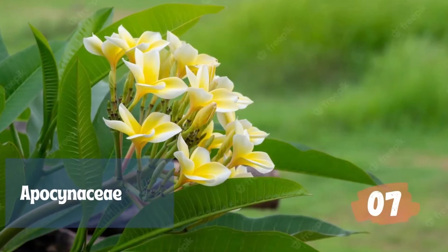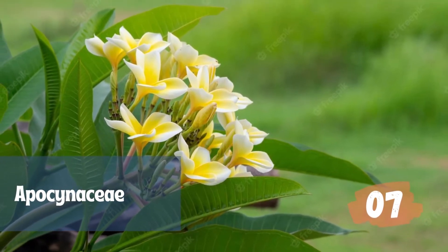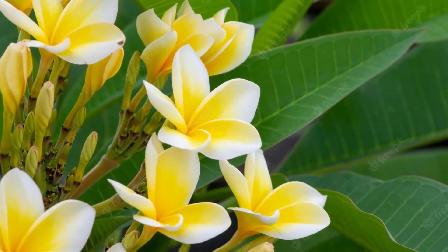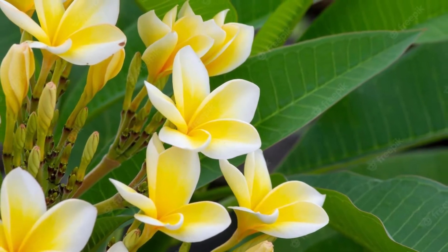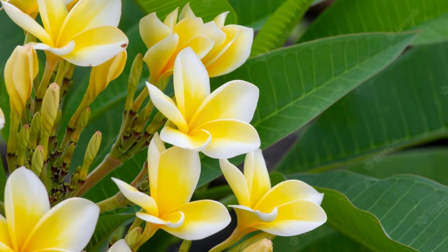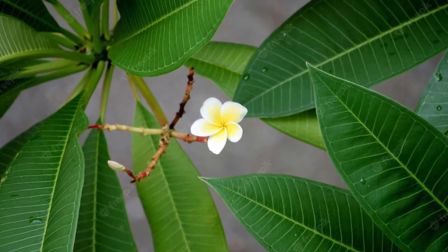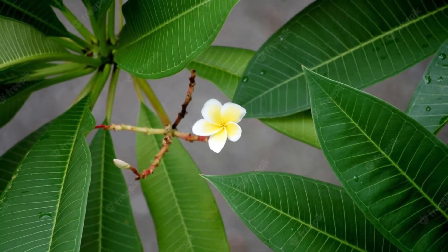The Apocynaceae are trees, shrubs, or sometimes herbs, usually with milky sap, comprising about 200 genera and 2,000 species. The leaves are simple, usually opposite, and stipules are usually absent. The flowers are bisexual and actinomorphic or sometimes weakly zygomorphic. Apocynaceae, the dogbane family, belongs to order Gentianales of flowering plants and includes about 400 genera and about 4,555 species of trees, shrubs, woody vines, and herbs, distributed primarily in tropical and subtropical areas of the world.